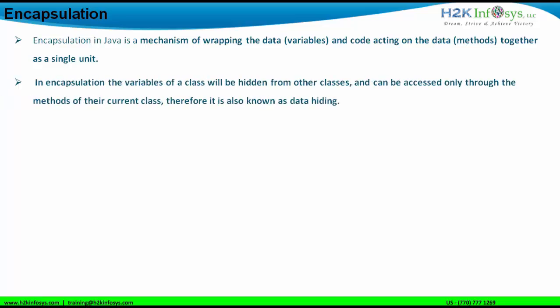In other words, encapsulation means the variables of a class will be hidden from other classes. So you define a variable in a particular class and it will be hidden from other classes — other classes will not be able to use those variables. It can be accessed only through the methods of the current class. Therefore, it is also known as data hiding.